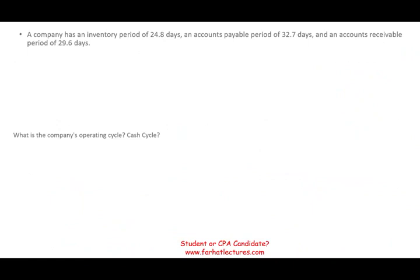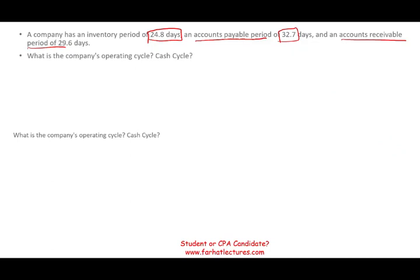Let's look at typical exam questions. A company has an inventory period of 24.8 days, an accounts payable period of 32.7 days, and an accounts receivable period of 29.6 days. You could be asked: what is the operating cycle and what is the cash cycle for this business?